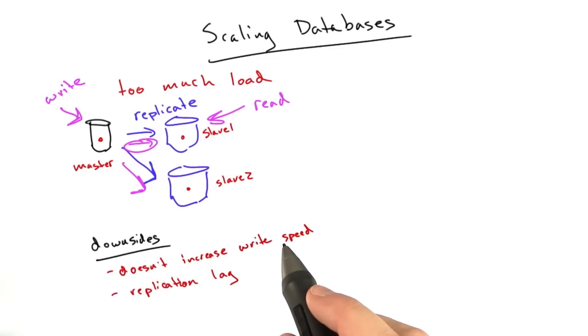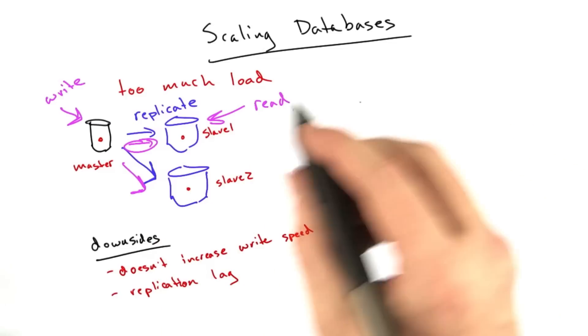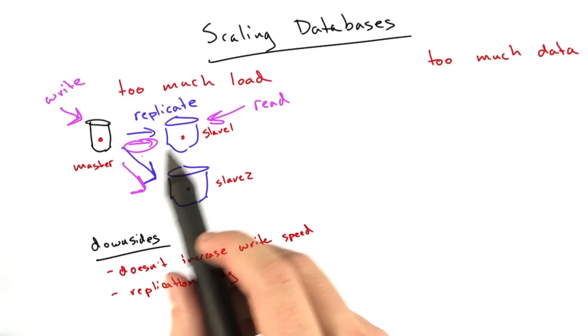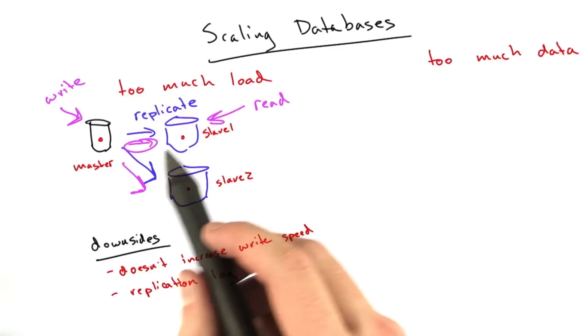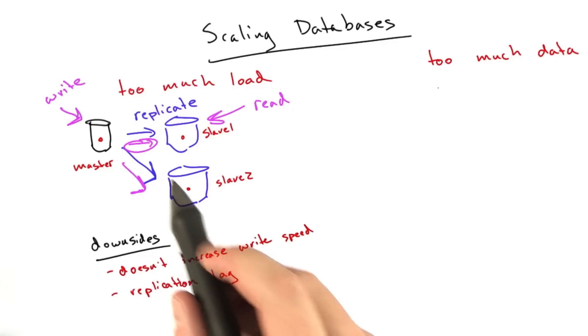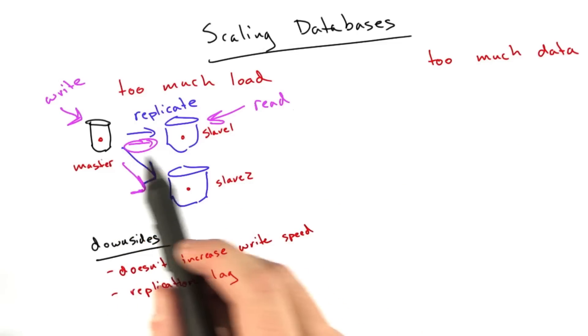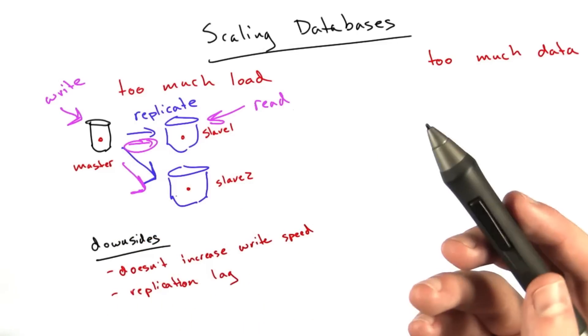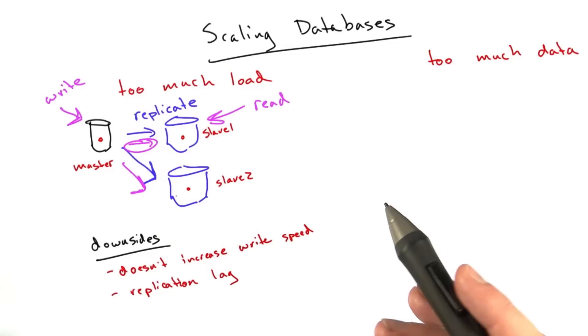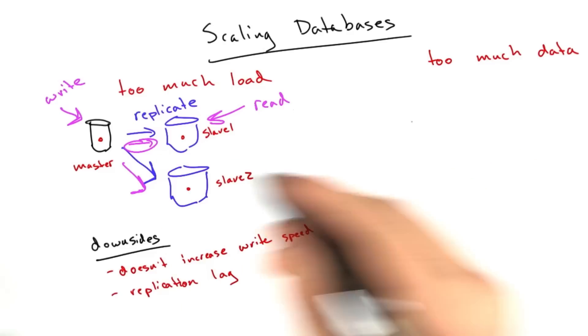This occurs when you write a piece of data to the master, but the read hits one of these slaves before the data has propagated. That's called replication lag, and you can sometimes get some funny behavior. I bring it up now because in the database we'll be using in this class, you can occasionally see symptoms of this type of behavior.